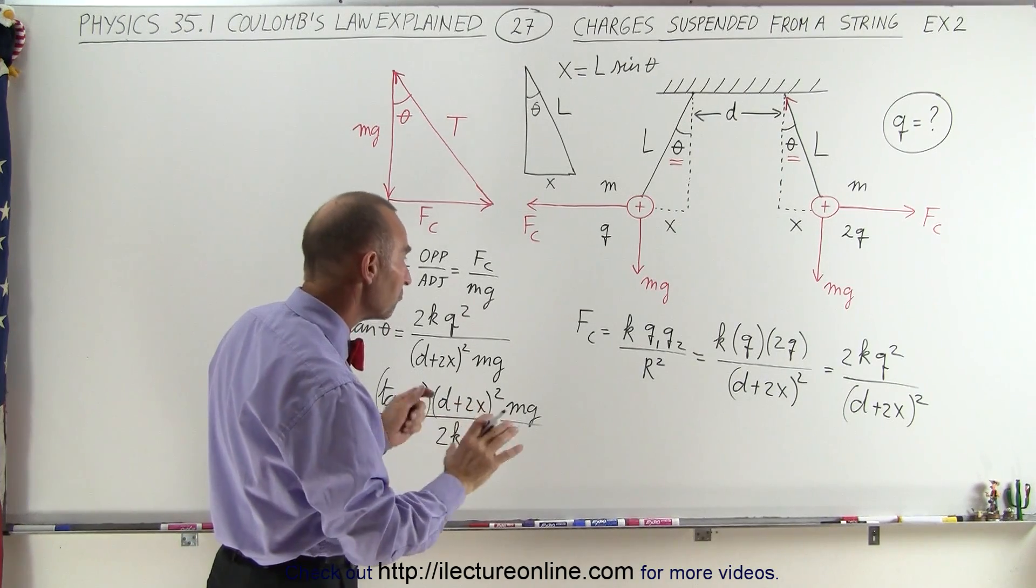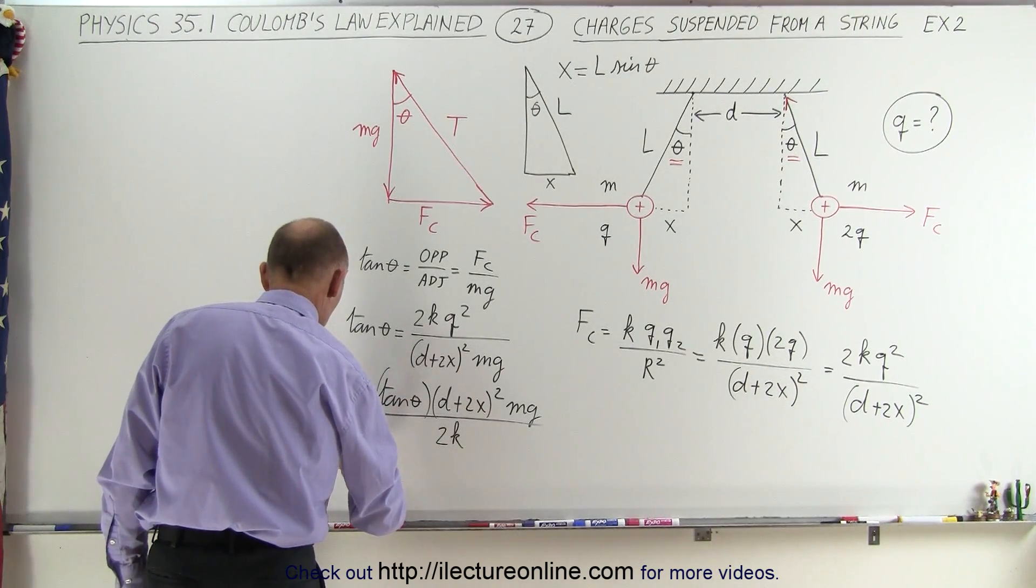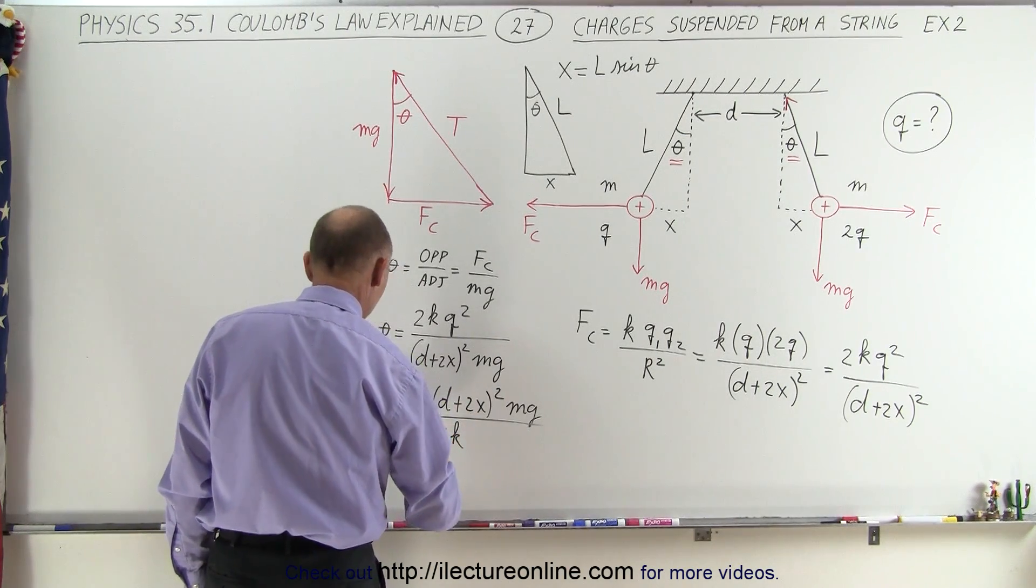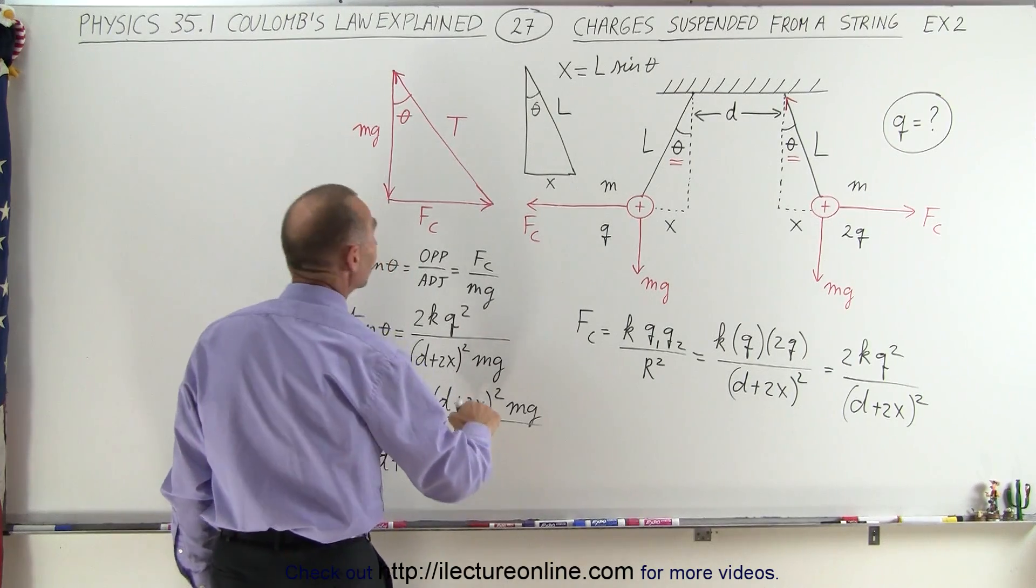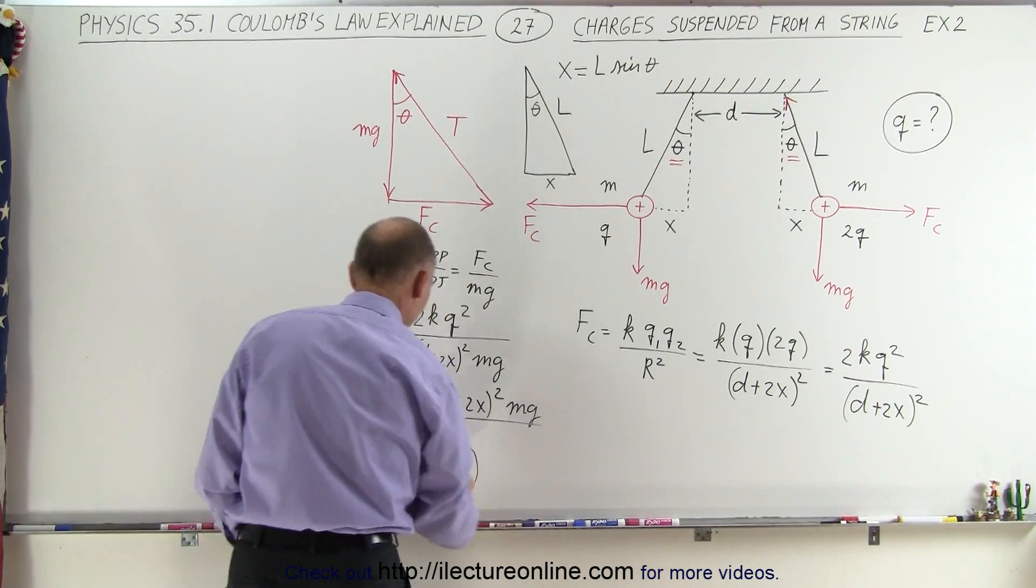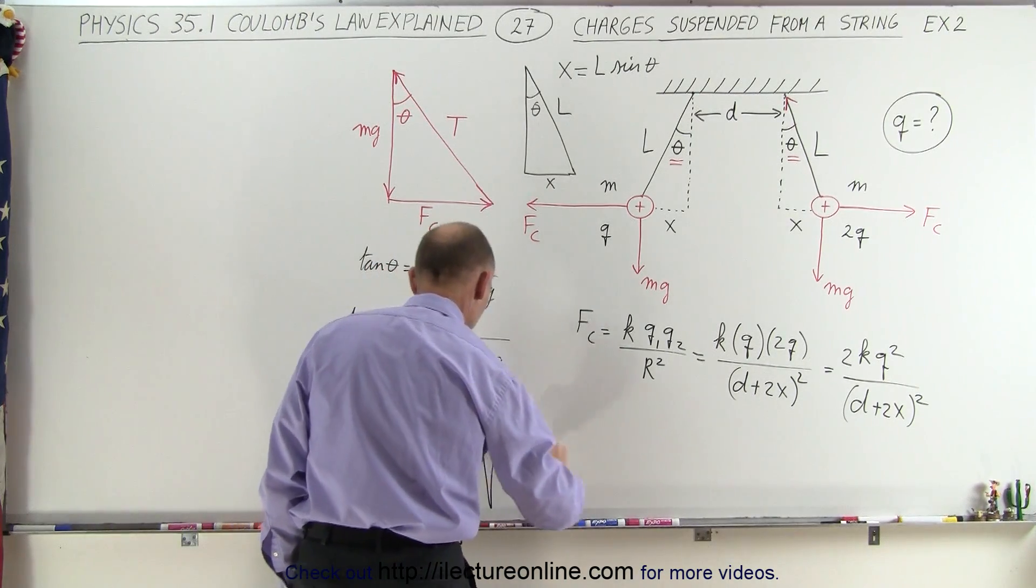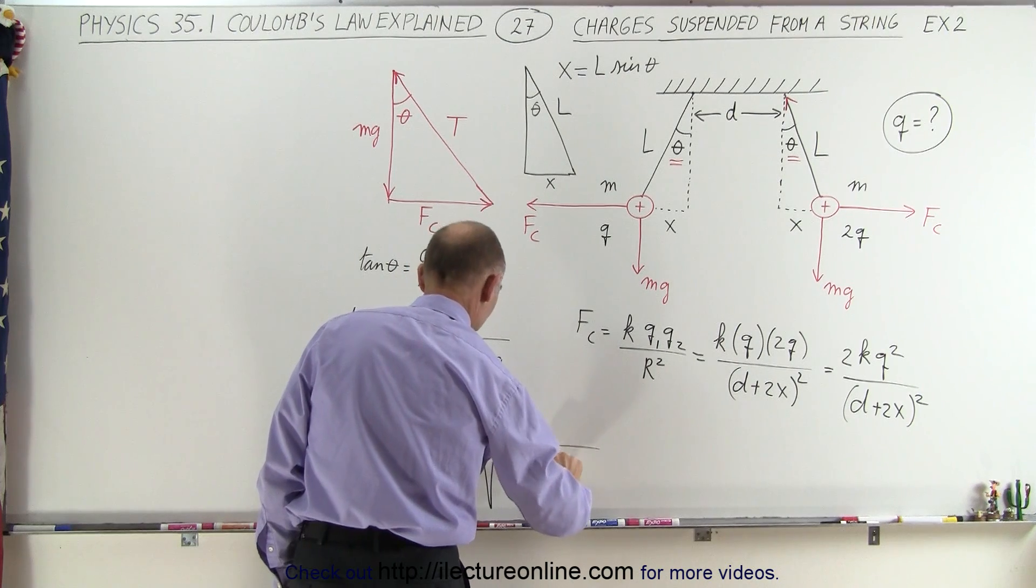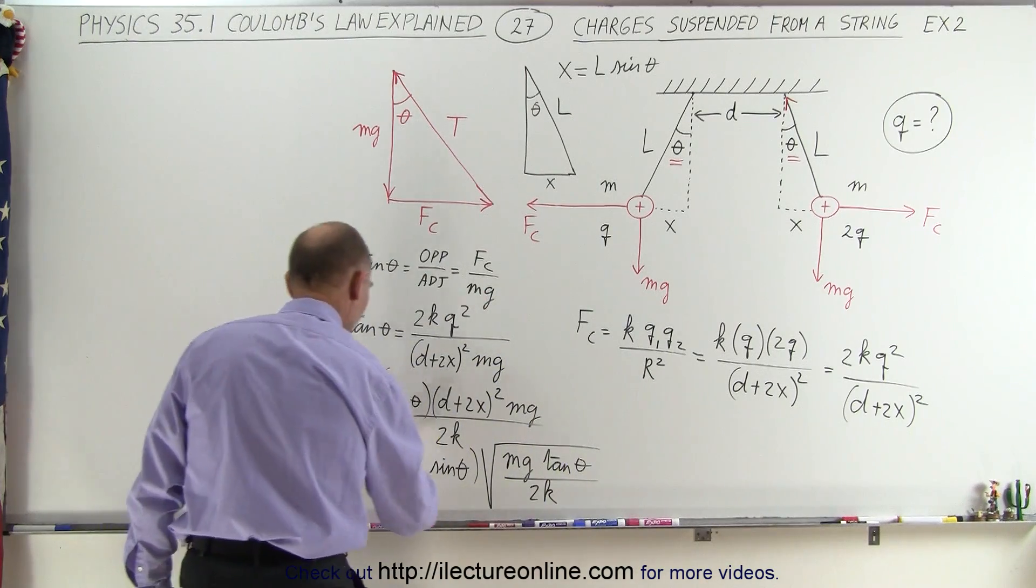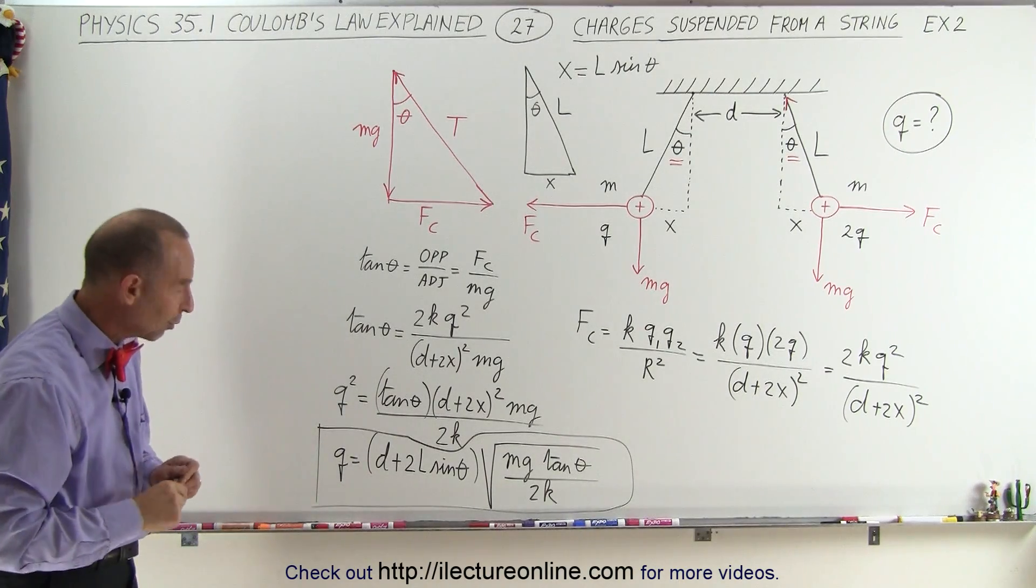Let's take the square root of both sides. So we can then say that q is equal to, on the left side we have D + 2X, that would be D + 2 times X, and X is L sine theta, so that becomes 2L sine theta. And of course, since we took the square root of both sides, the square disappears, then we still have the square root of mg times the tangent of theta, all divided by 2K. And this probably is the ultimate form, and so this would be then the final form of the answer for q, the charge given the distance d, the length L, the angle theta, and the mass m.